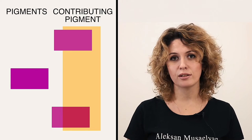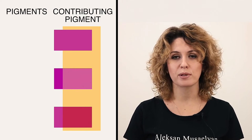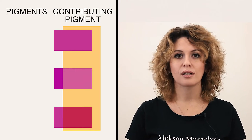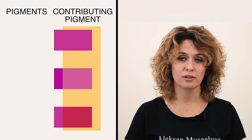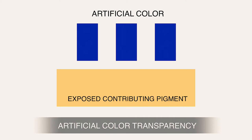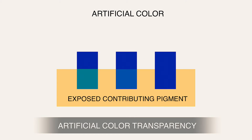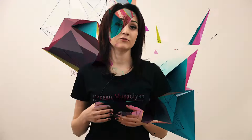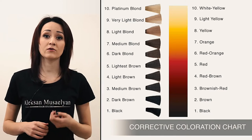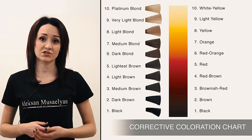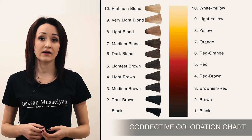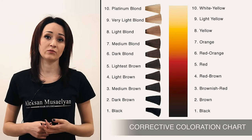The exposed contributing pigment is needed to understand what is under the artificial color. Not all dyes have the absolute ability to cover the exposed contributing pigment. This can especially be noticeable when dyeing gray hair. The more transparent the cosmetic color is, the greater will eventually be seen the pigment to be toned down or neutralized. In this case, the corrective coloration chart is often used for convenience. It shows which color is formed by the destruction of melanin depending on the level of tone depth.